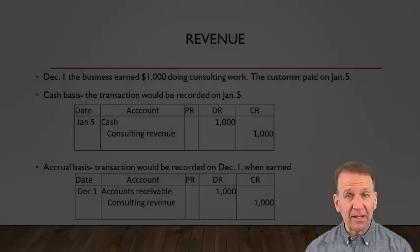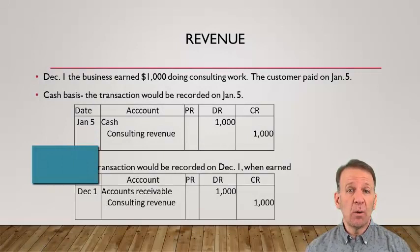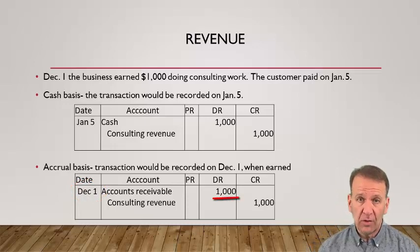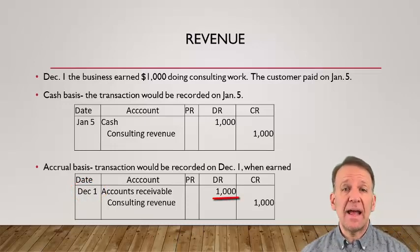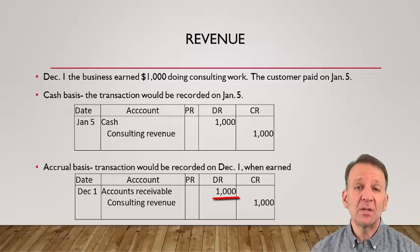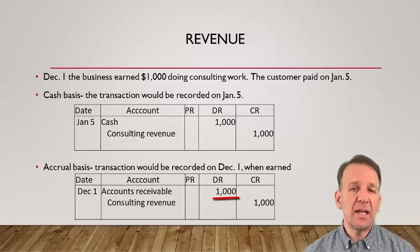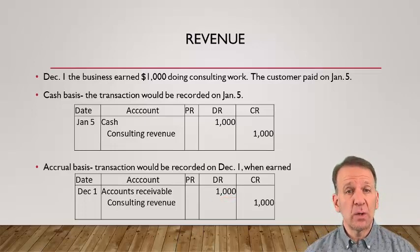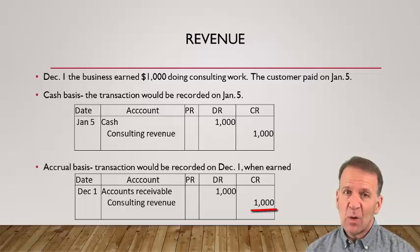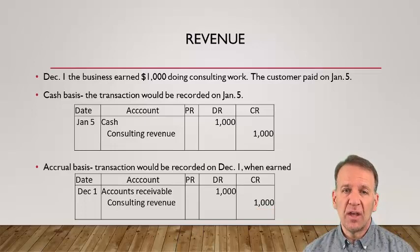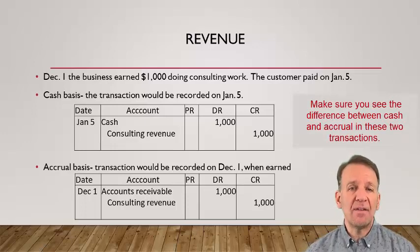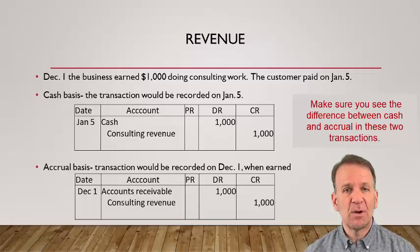Now let's take a look at accrual accounting. In this same transaction, we will record our journal entry on December 1st. We will debit accounts receivable $1,000. Accounts receivable is an asset and means that someone owes us money. On December 1st, we do the work so we get to record the revenue — accounts receivable increases $1,000 with a debit and consulting revenue increases $1,000 with a credit. Later, when the customer pays us, we debit cash $1,000 and credit accounts receivable $1,000, so the accounts receivable will have a zero balance.